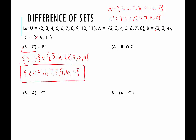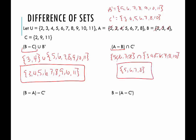In our next example, we have the difference of A and B — everything in A that's not in B. They both have 2, 3, and 4, so those are out. That leaves 5, 6, 7, and 8. We intersect that with C complement, which is 3, 4, 5, 6, 7, 8, and 10. What do they have in common? 5, 6, 7, and 8. So the answer is the set containing 5, 6, 7, and 8.